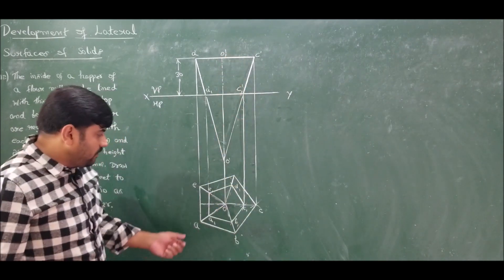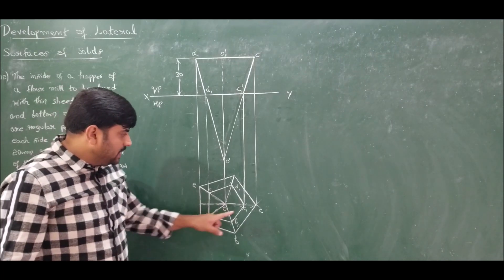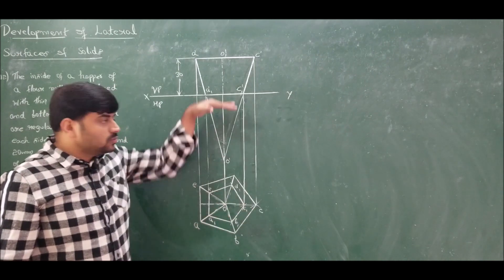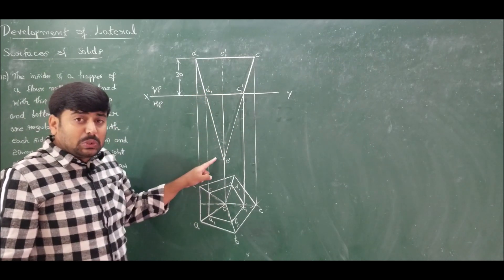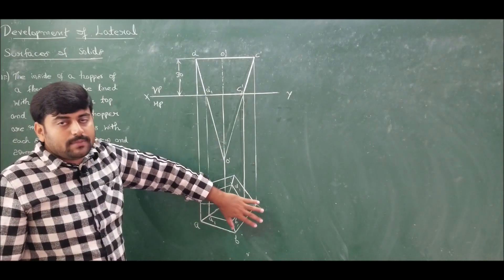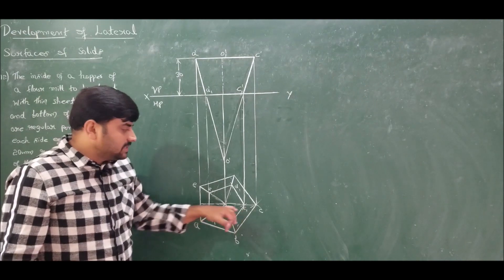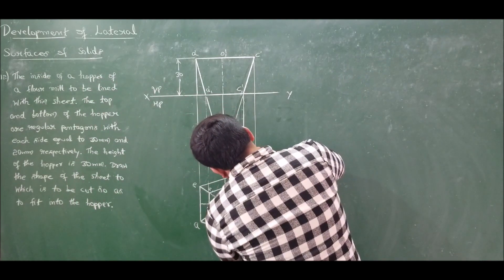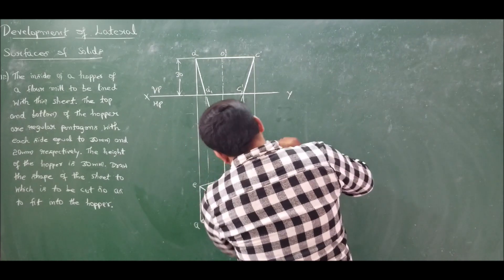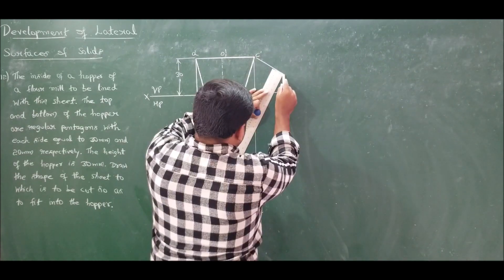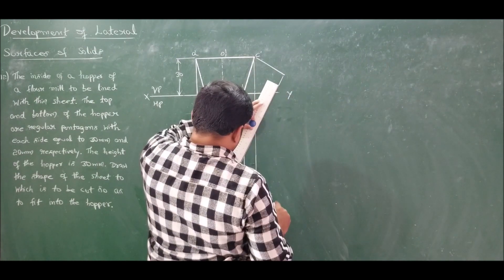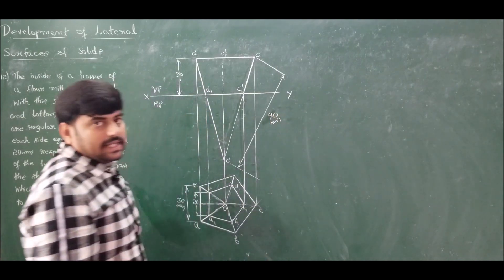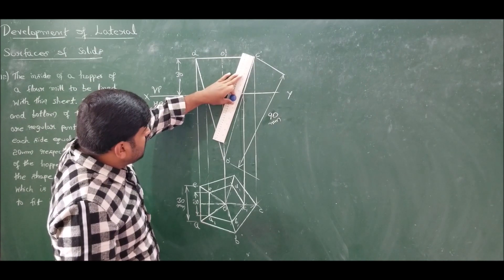There are totally five slant edges: AO, BO, CO, DO, and EO. In this case, CO is parallel to VP, so C'O' serves as the true slant edge — no rotation is needed since we already have one slant edge parallel to VP. Measure C'O' to get the true slant edge dimension, which measures 90 mm.